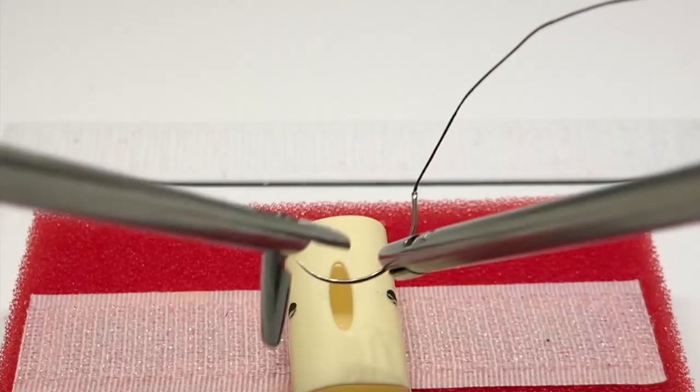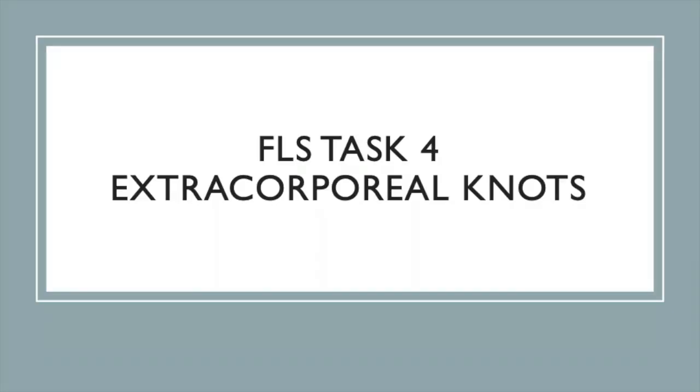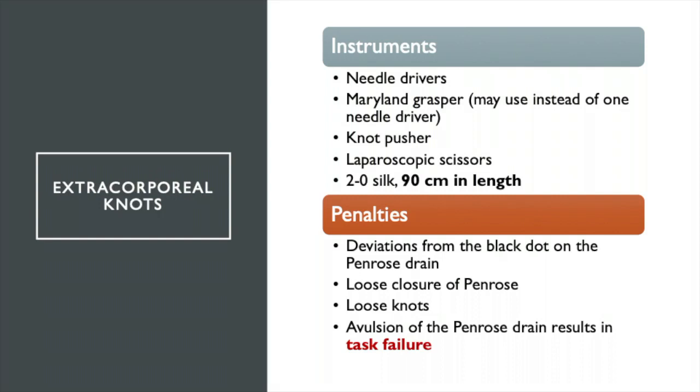Mastery of the skill is crucial for FLS Tasks 4 and 5. Task 4 is the extracorporeal knot, and the materials you need are listed here. Note the recommended suture is 90 cm long.